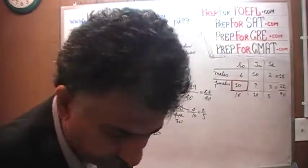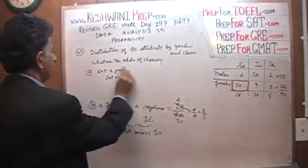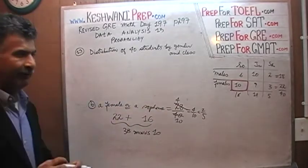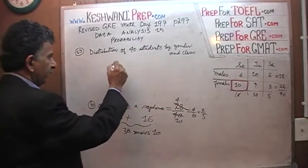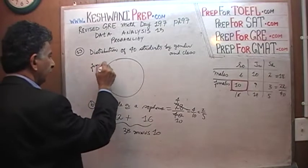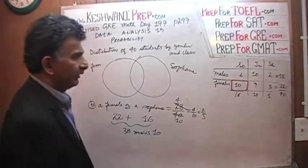Now this particular question, I'm going to erase part A so that it doesn't get too crowded. This particular question, just out of curiosity, let's ask ourselves, what would it look like in a Venn diagram? And the Venn diagram will show it like this. Here is your female and here are your sophomores. How many females are there?